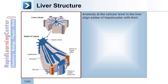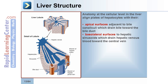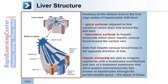At the cellular level in the liver, plates of hepatocytes align with their apical surfaces adjacent to bile canaliculi, which drain bile toward the bile duct, and basolateral surfaces to hepatic sinusoids, which drain hepatic venous blood toward the central vein. Note that hepatic venous blood flows in the opposite direction of bile. Hepatic sinusoids are akin to irregular capillaries with a fenestrated endothelium and lack of a basement membrane that allow plasma macromolecules free access to hepatocytes through the perisinusoidal space, also called the space of Disse.